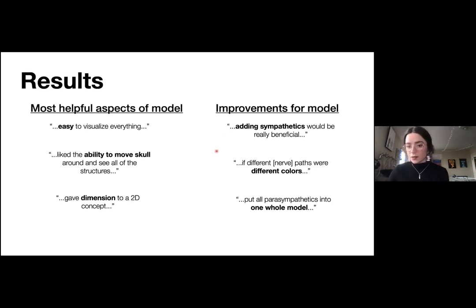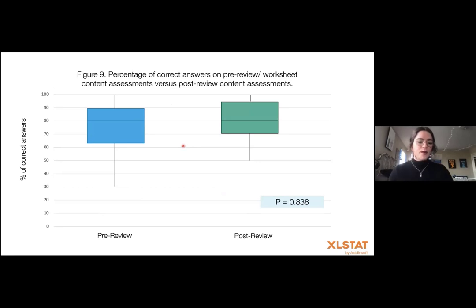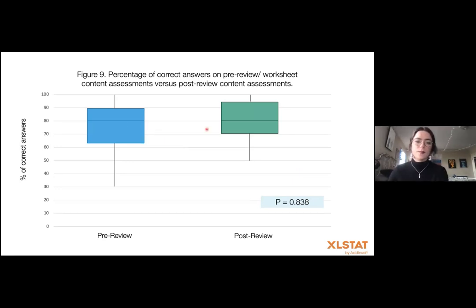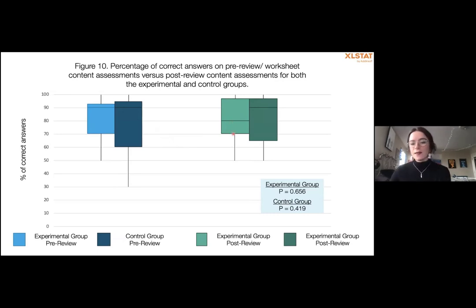This figure shows the number of correct answers on the content assessment, specifically comparing pre-review to post-review for first and second-year students. This analysis gave a p-value that was insignificant, so there was no significant difference in content assessment correct answers pre-review versus post-review. Similarly, dividing results into experimental versus control groups, the differences between groups in correct answers on the content assessments were also not significant.